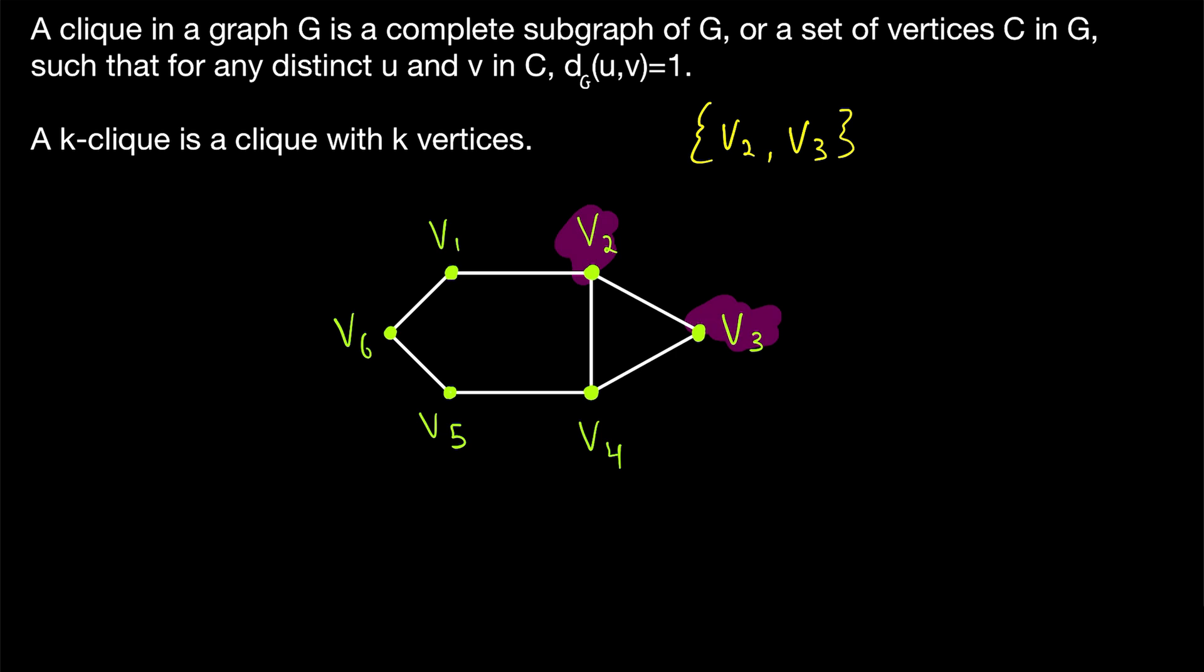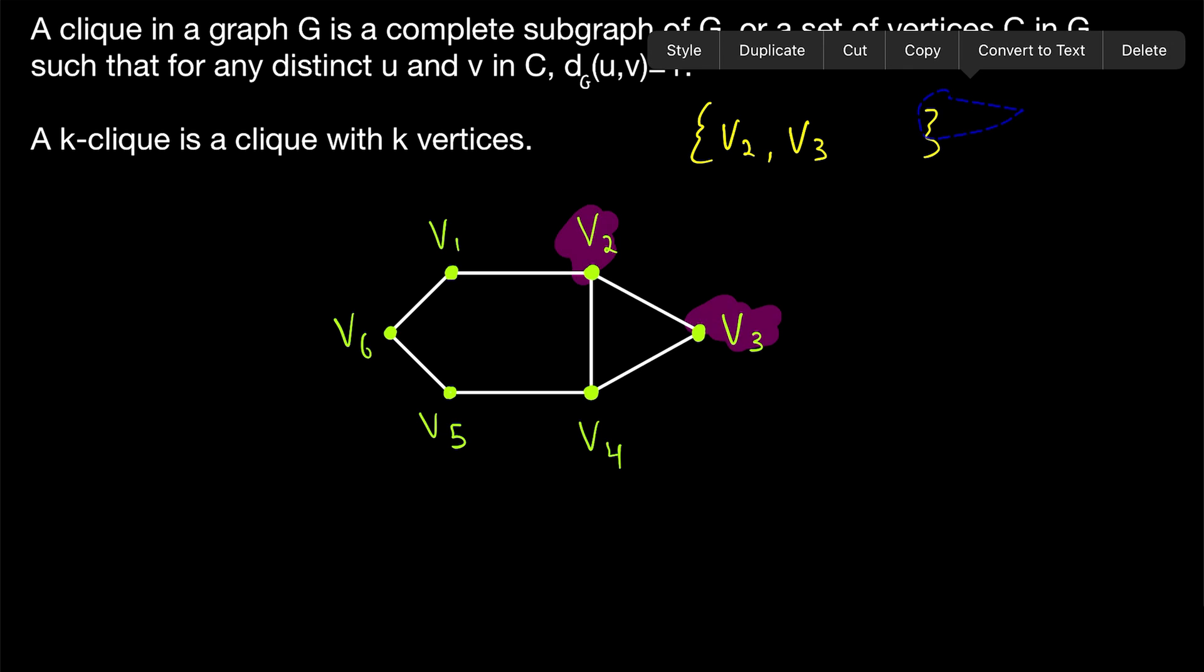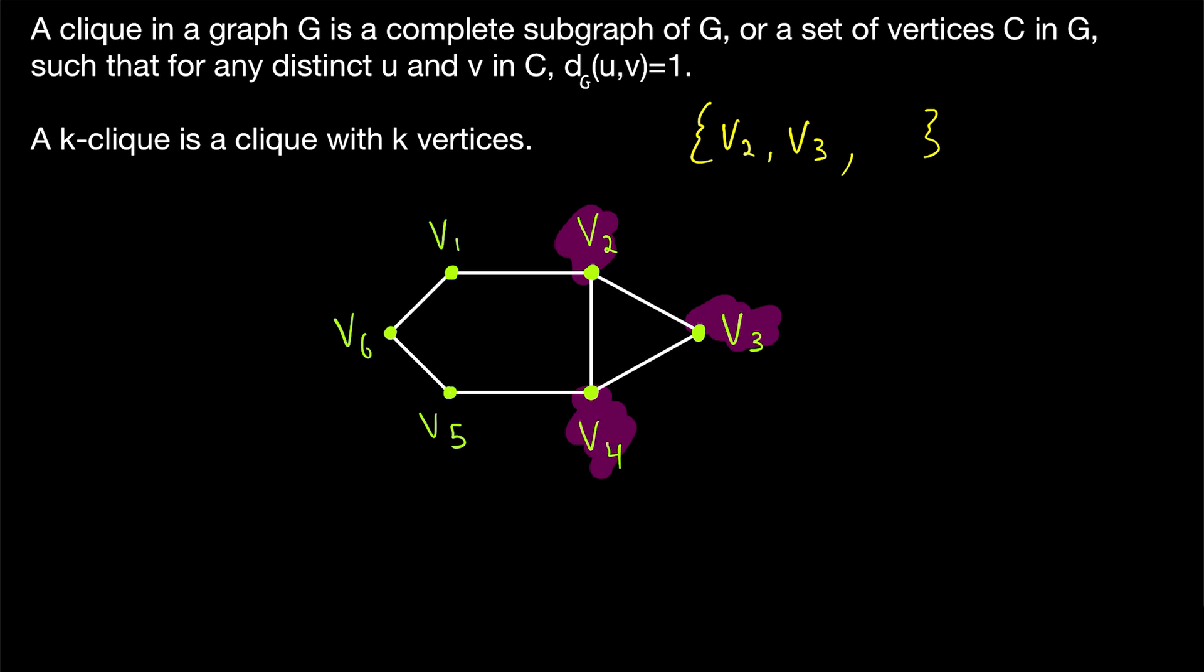It is indeed a set of vertices that are all adjacent to each other, but it's not maximal because we could extend it by including another vertex of the graph. We could include the vertex v4, and then this would be a set of vertices that's bigger where all the vertices are adjacent to each other. This, on the other hand, is maximal because we can't include any other vertices of this graph to get a bigger click.